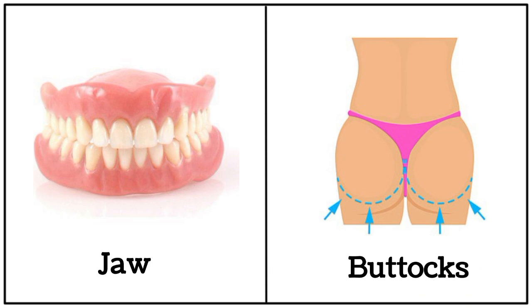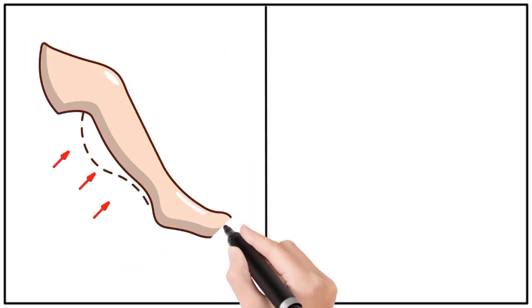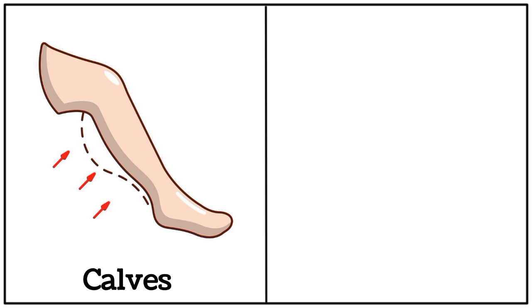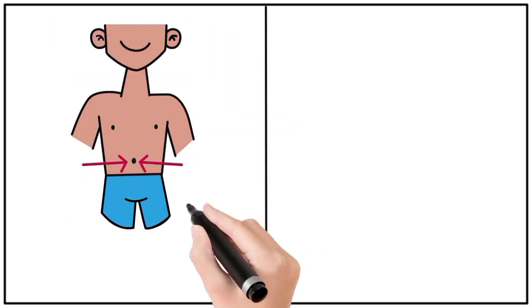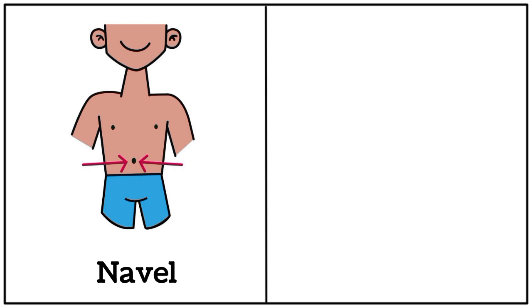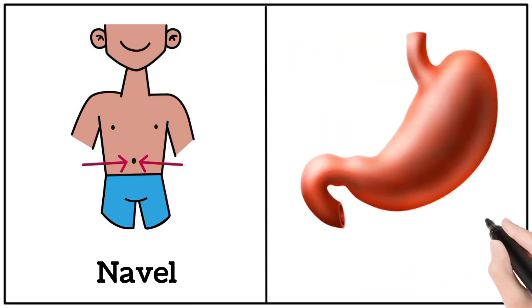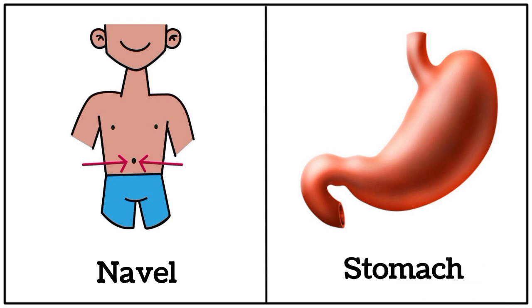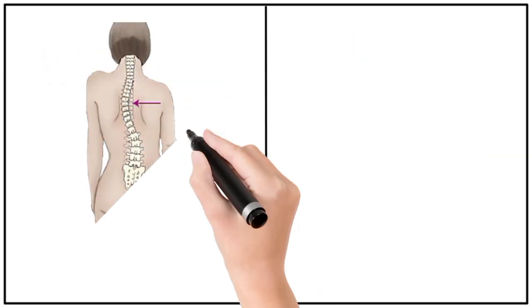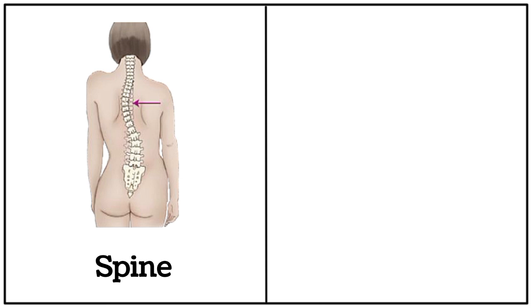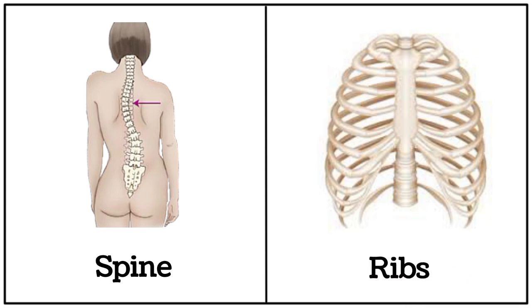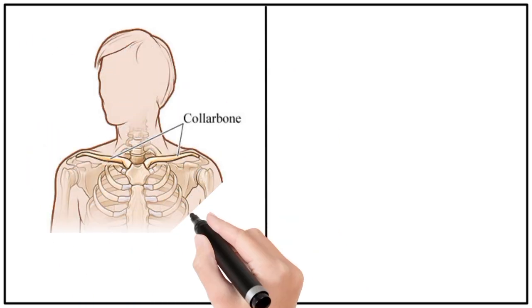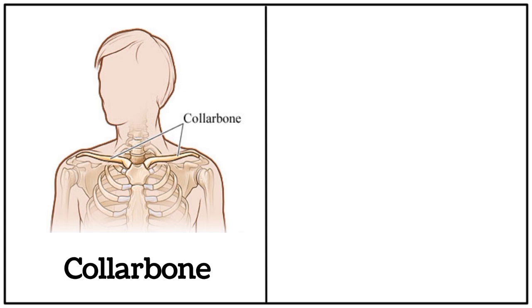Buttocks. Calves. Armpits. Navel. Stomach. Spine. Ribs. Collarbone.